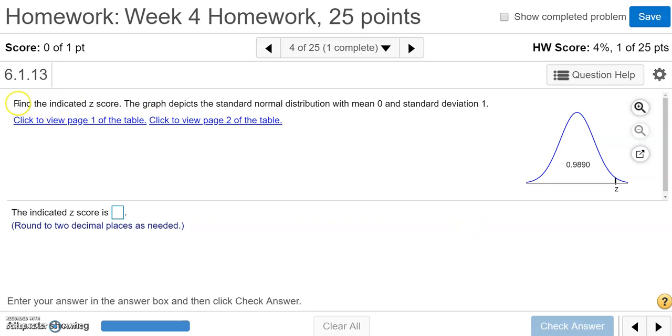Now this question says find the indicated z-score. The graph depicts the standard normal distribution with a mean of 0 and a standard deviation of 1. So remember, the normal distribution is just one of these that has this nice bell-shaped curve. Sometimes we need to calculate the areas under these curves to find the probabilities of something that we're interested in.